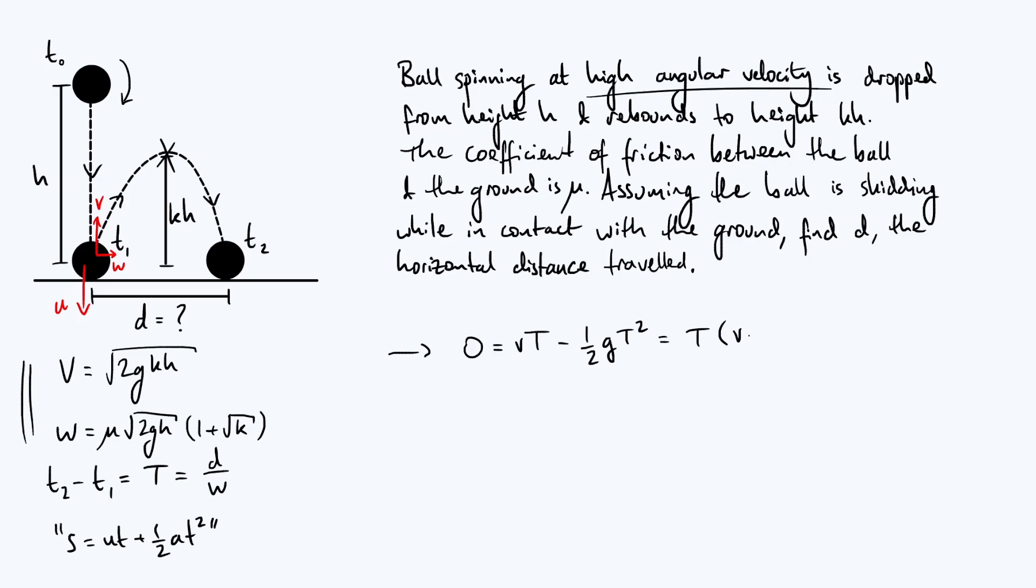And then we can solve this by factorizing a T out because it's a quadratic equation. Take out T and then you get V minus a half GT. Now there are two solutions to this equation. Of course, one of them is just T equals zero, but that's the uninteresting solution, which just means the particle has traveled zero distance at zero time. So we are going to specifically look for the solution where T is bigger than zero, which implies the bracketed term is zero and therefore V equals a half GT. And we have an expression for V, remember that was root 2GKH, and we have an expression for capital T, which was D over W, and we've also got our expression for W.